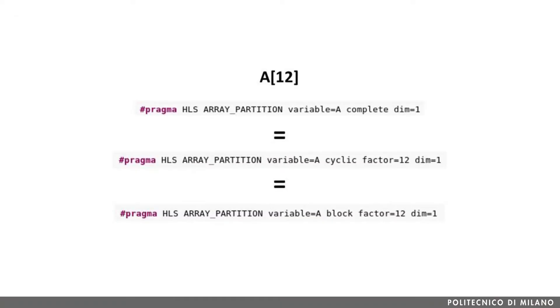Recall that when we partition an array, we also need extra logic to understand from which partition we need to access the data. If the partitioning is well calibrated to the actual memory accesses that we need to perform in parallel, such logic tends to simplify. As in our previous example, in which for an unrolling factor of 4 we use a corresponding cyclic array partitioning with a factor of 4, Vivado HLS can generate a clean hardware implementation in which at every iteration of the loop, we access the 4 partitions in parallel at addresses that are very simple to compute.